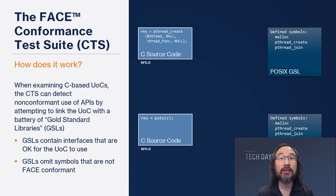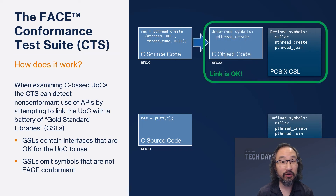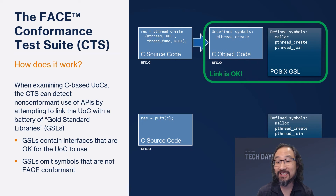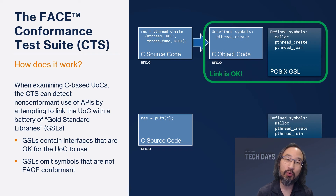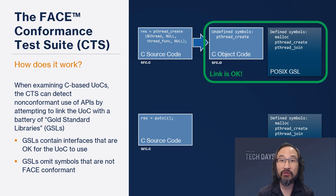Let's quickly take a look at how the CTS — the FACE Conformance Test Suite — currently works. At the top here, we have some C source code that calls pthread_create. You would normally compile this to object code, and in the .o file you get a reference to pthread_create. Normally you would link this with operating system libraries. What the CTS does is rather than linking with OS libraries, it instead has a collection of gold standard libraries, or GSLs.